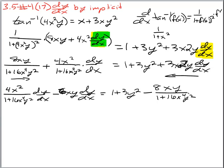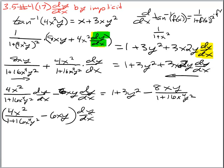Now we want to factor out the dy/dx. On the left hand side we have 4x squared over this denominator minus 6xy, the whole thing times dy/dx. Now we know that in order to solve for dy/dx we will have to divide both sides by that factor. But you really don't want to divide by that because you've got a fraction with another piece and it makes it ugly.